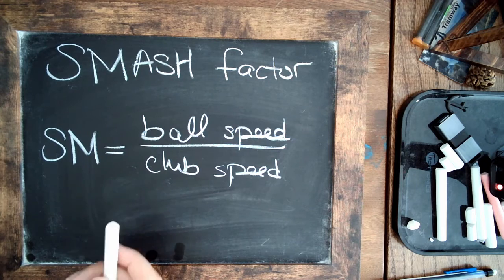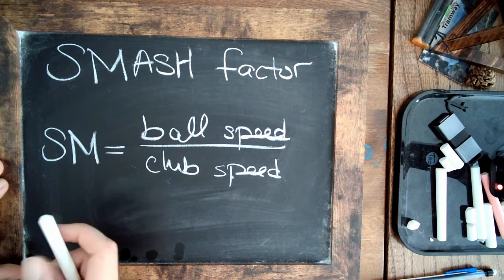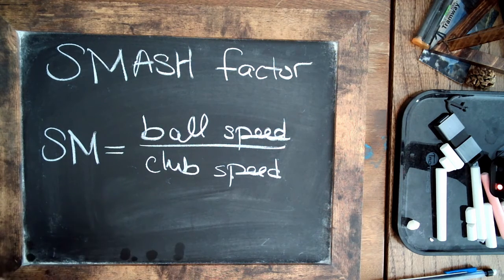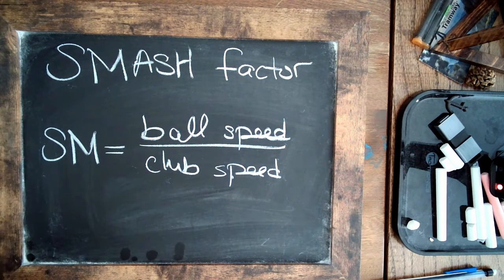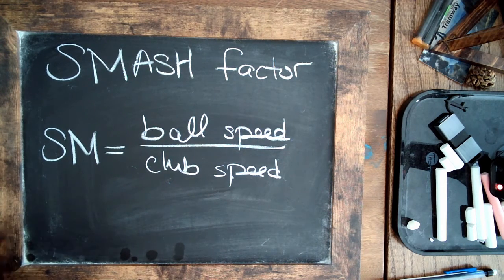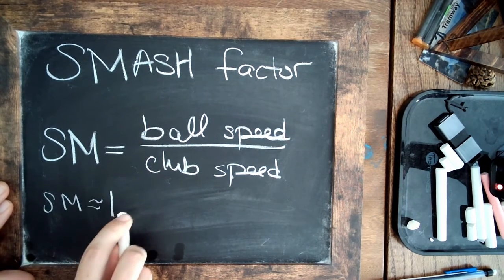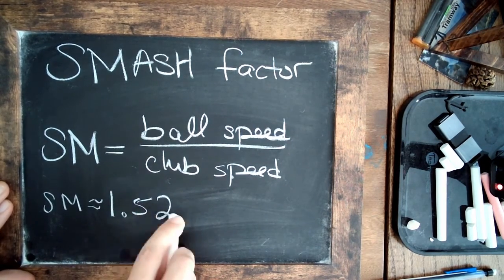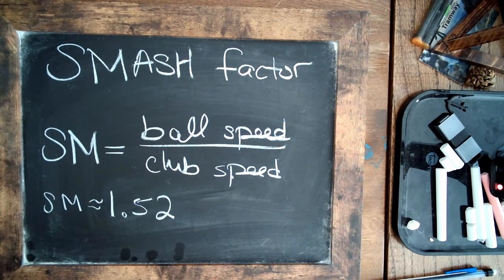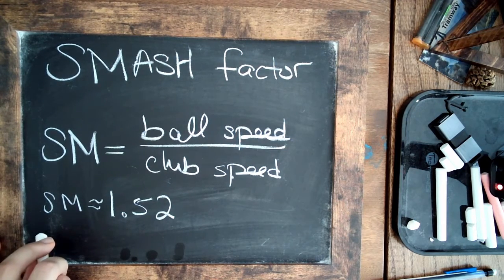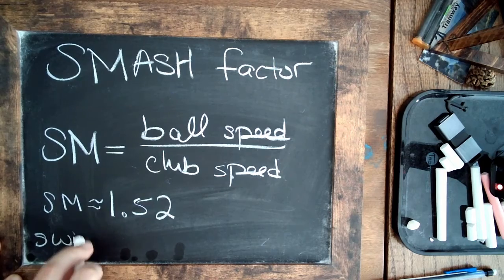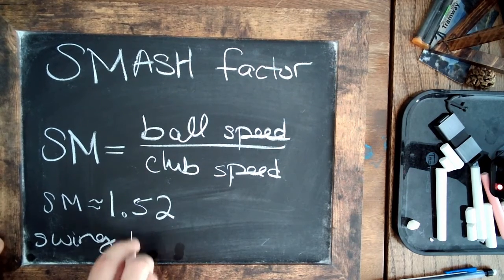Now a typical value for this for the golfer Justin Thomas, and I'll put a link in the description in which they actually talk to Justin Thomas about his smash factor, is around 1.52. So what that means is if he's swinging with a head speed of 100 miles per hour,